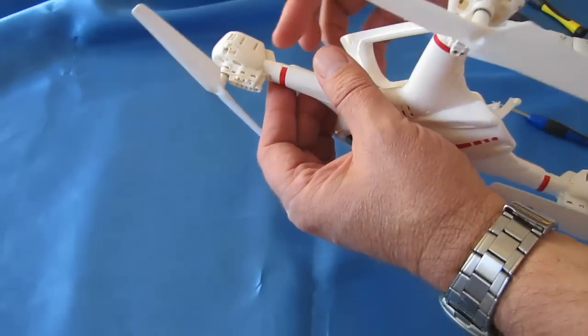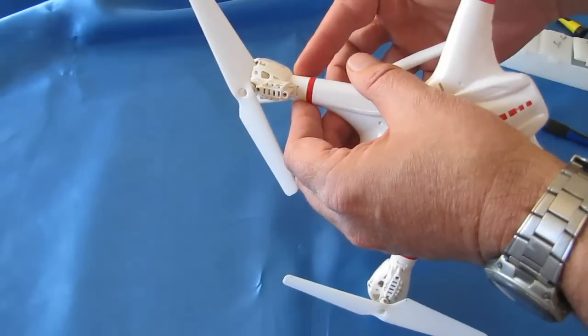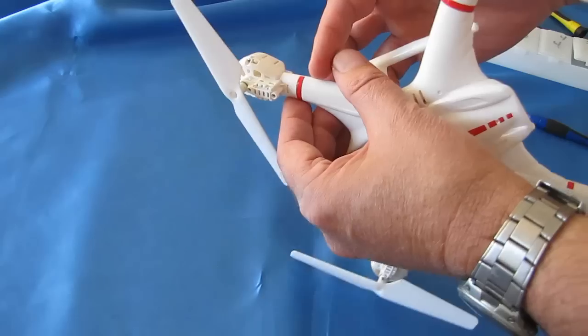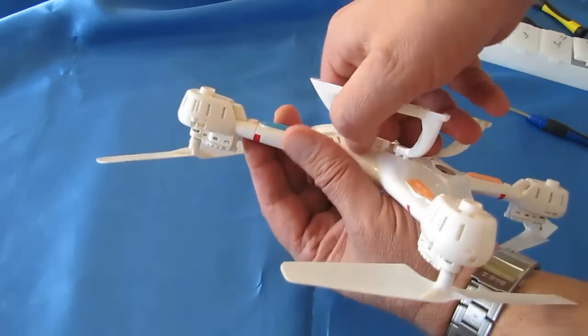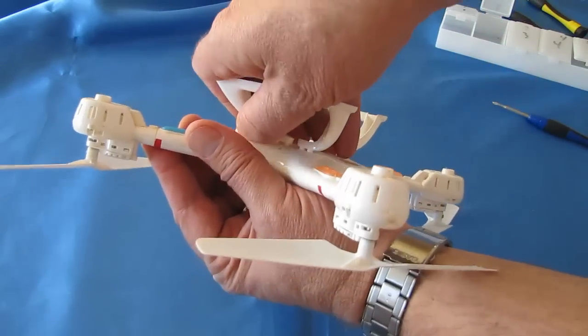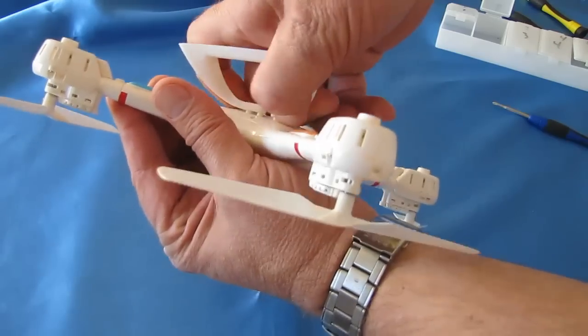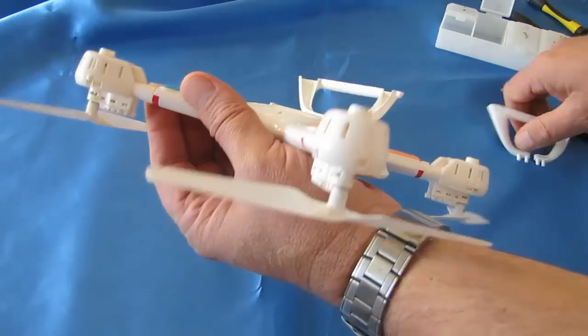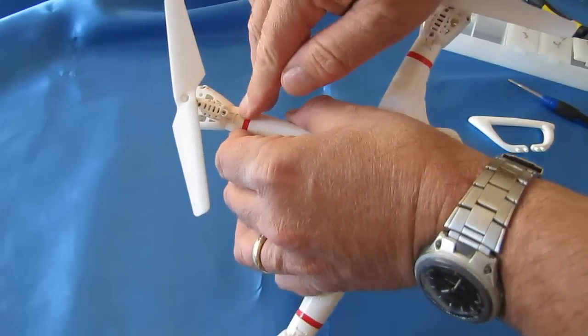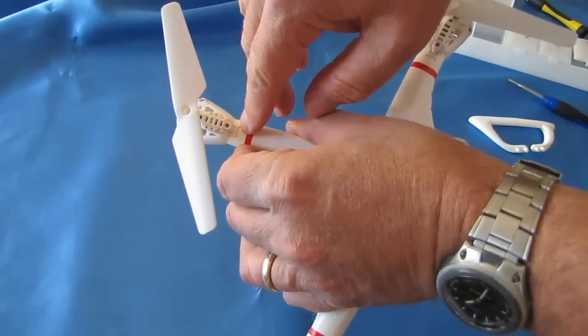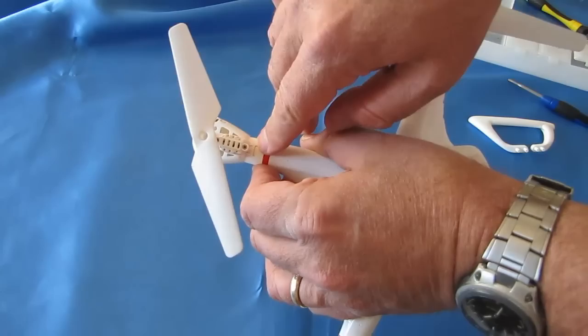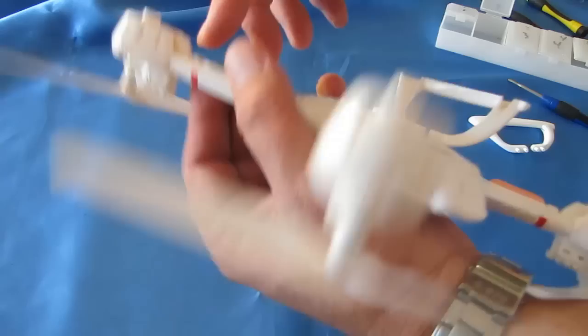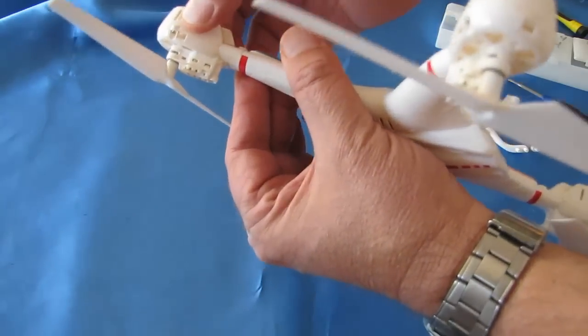Now you're going to need to remove this entire pod off the arm of the quadcopter, and to do that I would recommend first popping off the particular landing gear skid on the side that the arm is on. Now if you notice on the top of the pod, there's a little plastic clip that holds the pod, along with this bottom screw, in place.